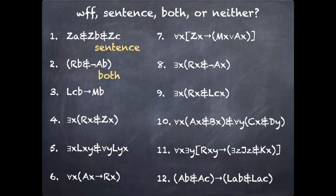Number three, still no variables, but it is a sentence because the outside parentheses are gone. Again, that's allowed by notational conventions only. Number four, you've got the variable X, but it's bound by the quantifier. All your parentheses are in place. Everything looks good. So that's both.